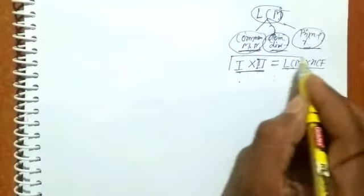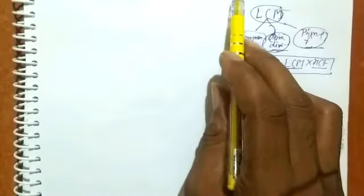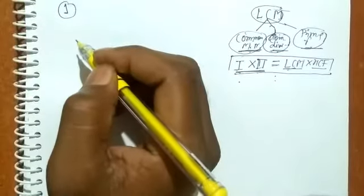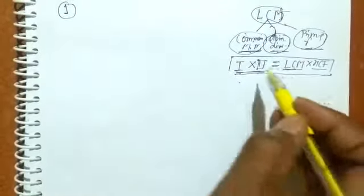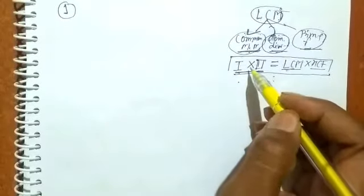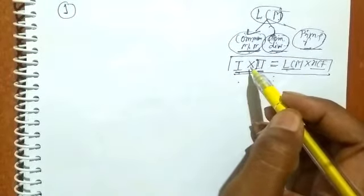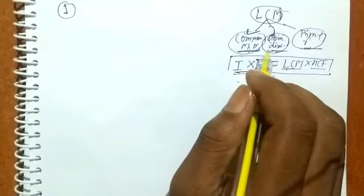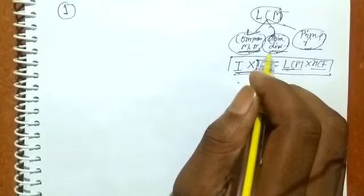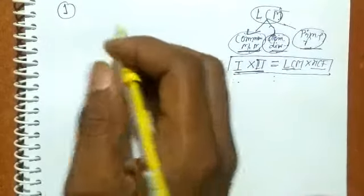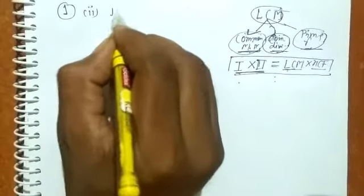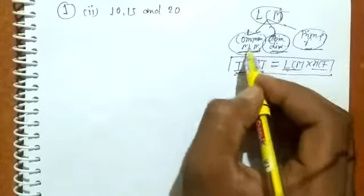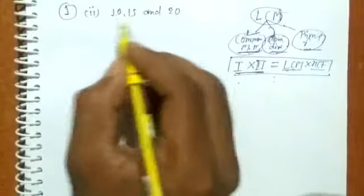This formula will be used in the questions of Exercise 8C. Let's start question number one. Question one says: using the common multiple method, find the LCM of the given numbers. I will solve part two; remaining parts you will solve by yourself. Part two is 10, 15, and 20. We have to follow the common multiple method, so first of all we have to find out the multiples.